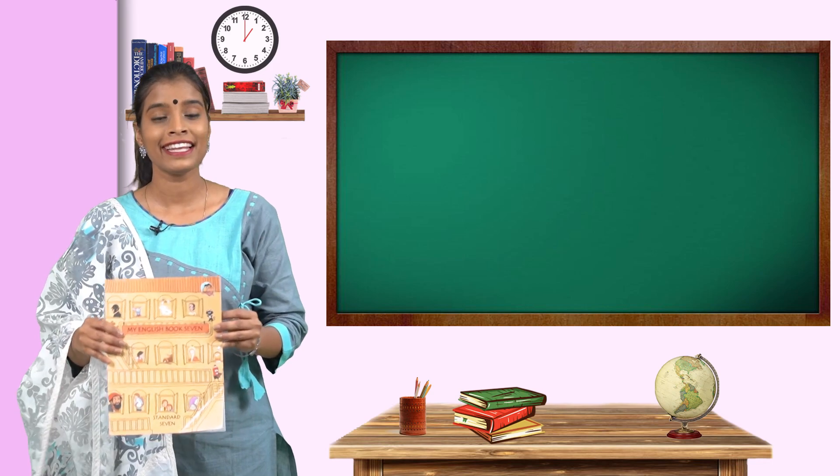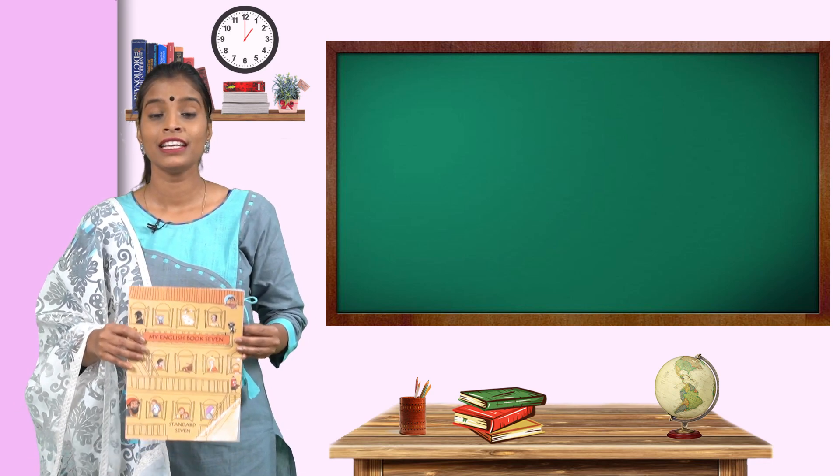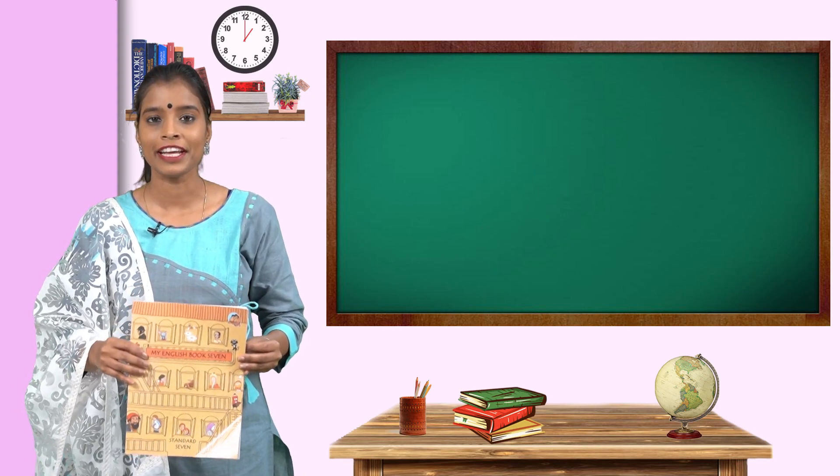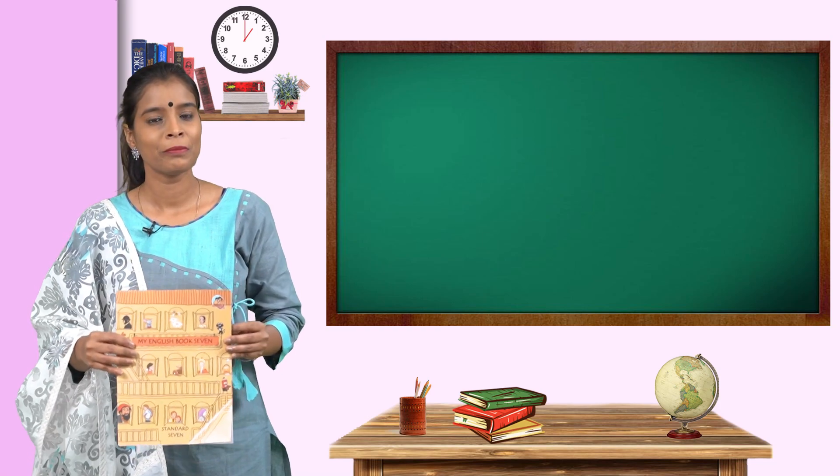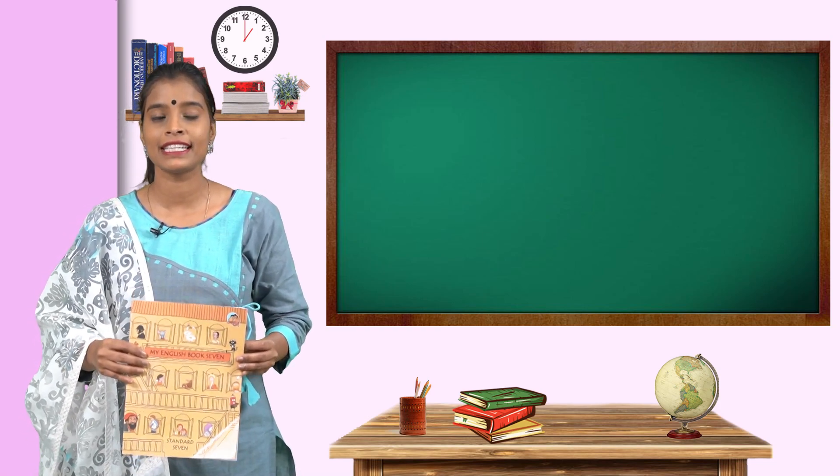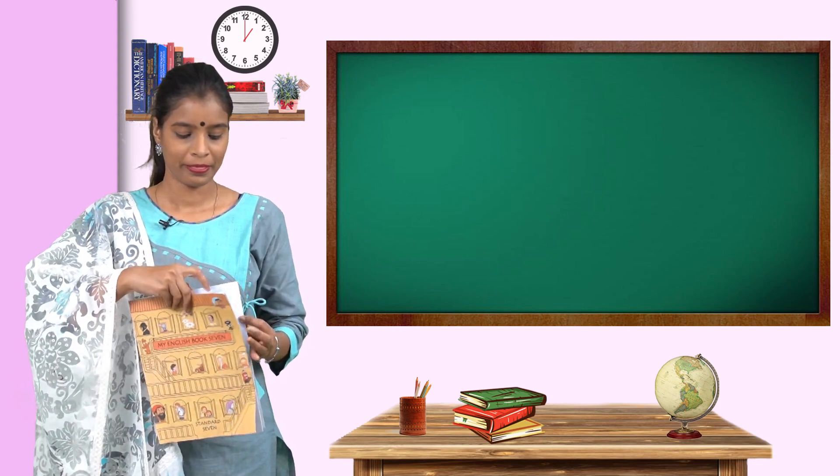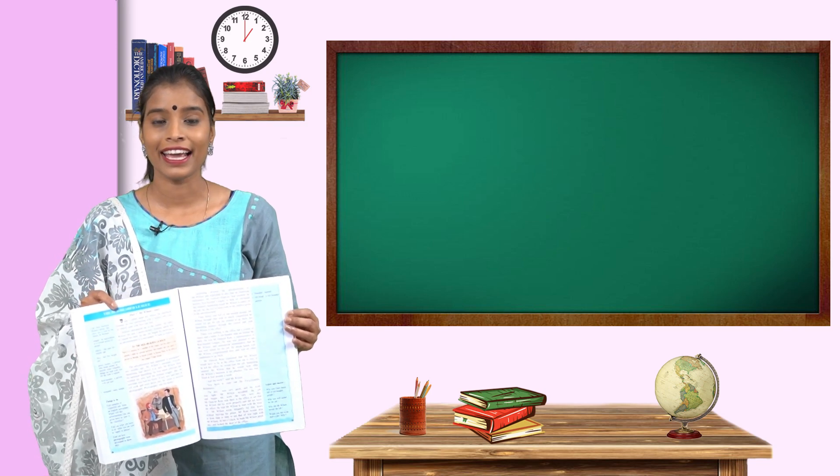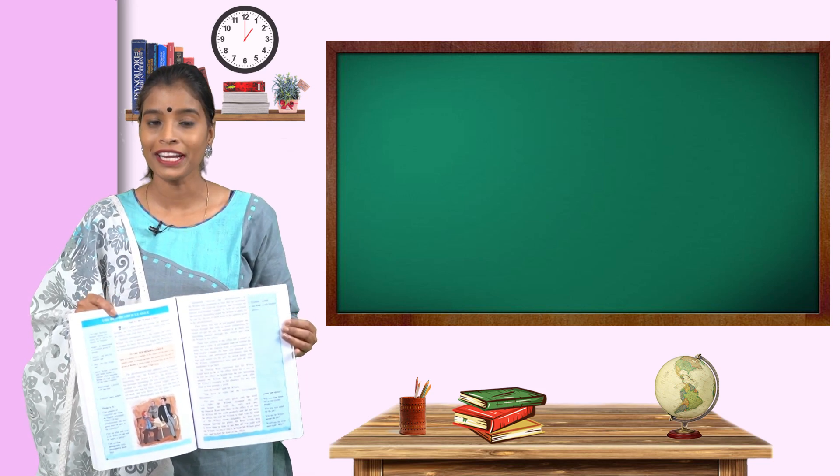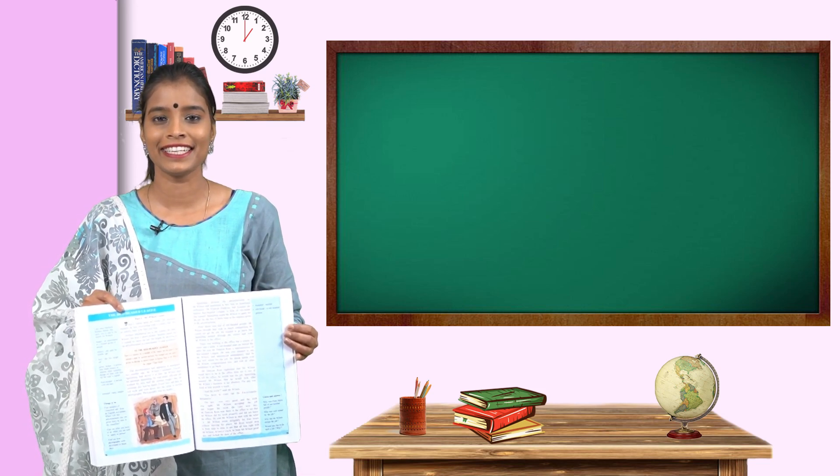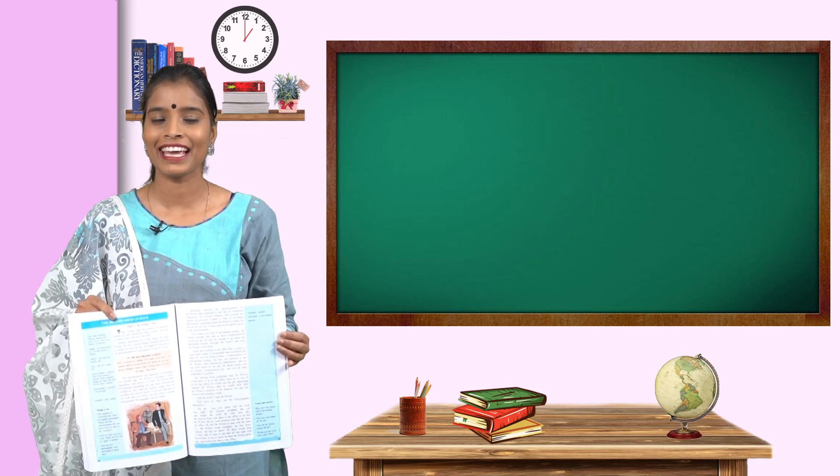Now let's read the story from our textbook. The name of the story is The Red Headed League. Children, please open page number 78 of your textbook. Now I will be reading this story and I request you to point at the words as I read them. And if you don't have a textbook, listen to me carefully.